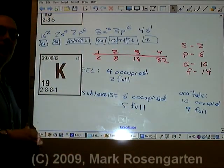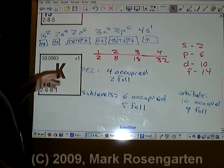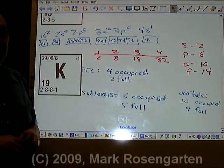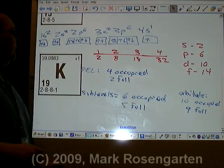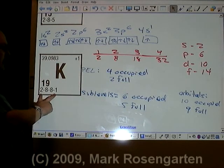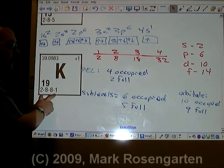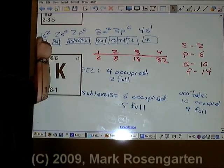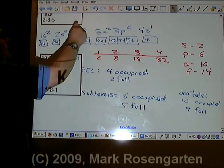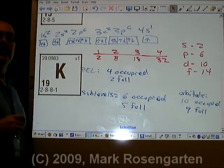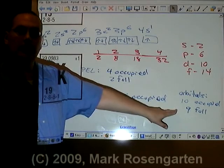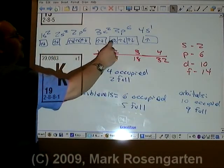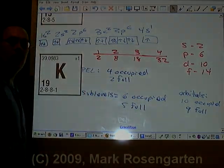And that's how you determine whether your principal energy level, sublevel, or orbital is occupied or full. For the principal energy level, just use the basic configuration given on the table. To find out how many sublevels are occupied or full, break it down into the expanded configuration. To find out how many orbitals are occupied or full, draw your box diagram, or orbital notation as it's otherwise called.